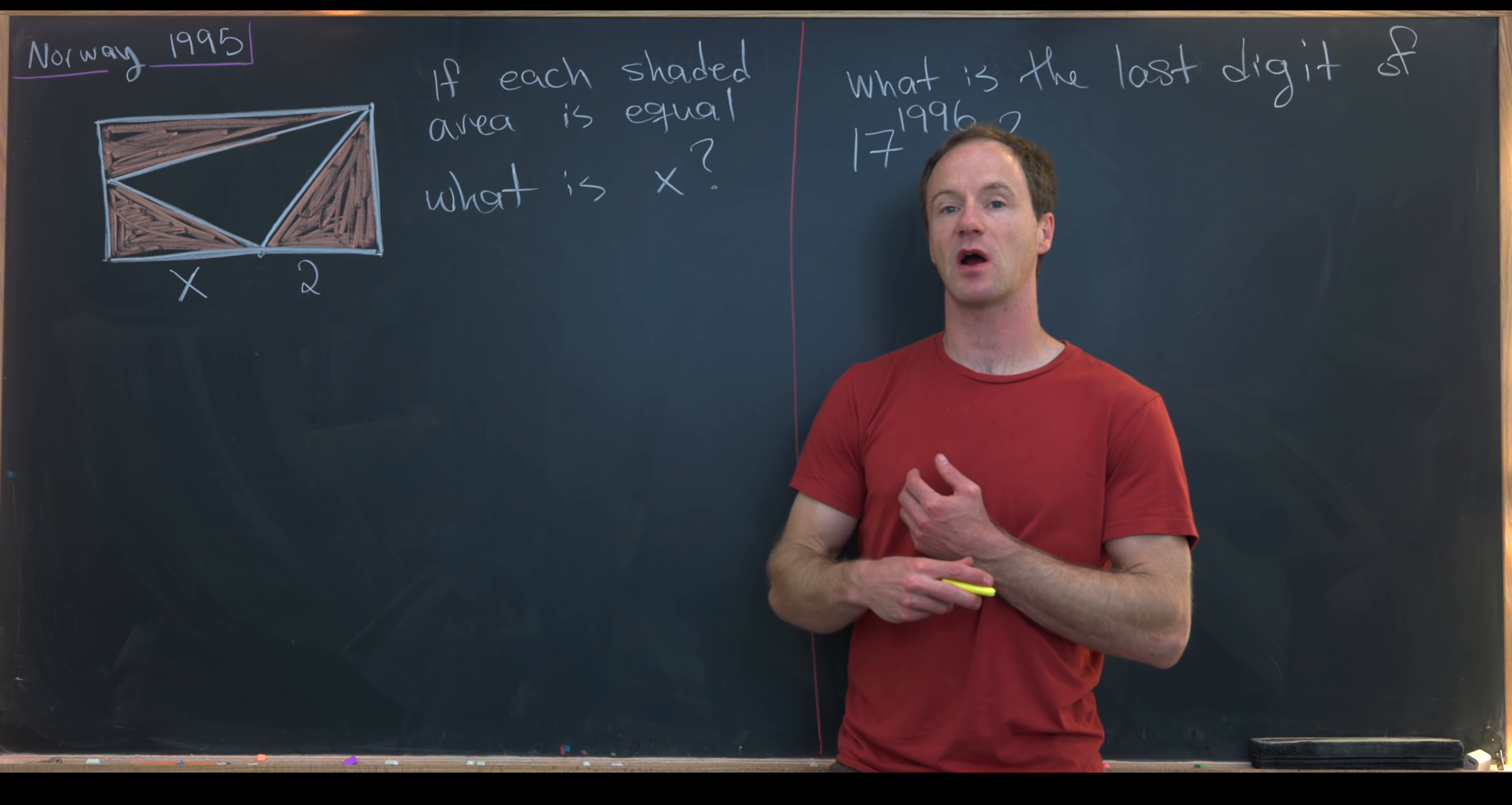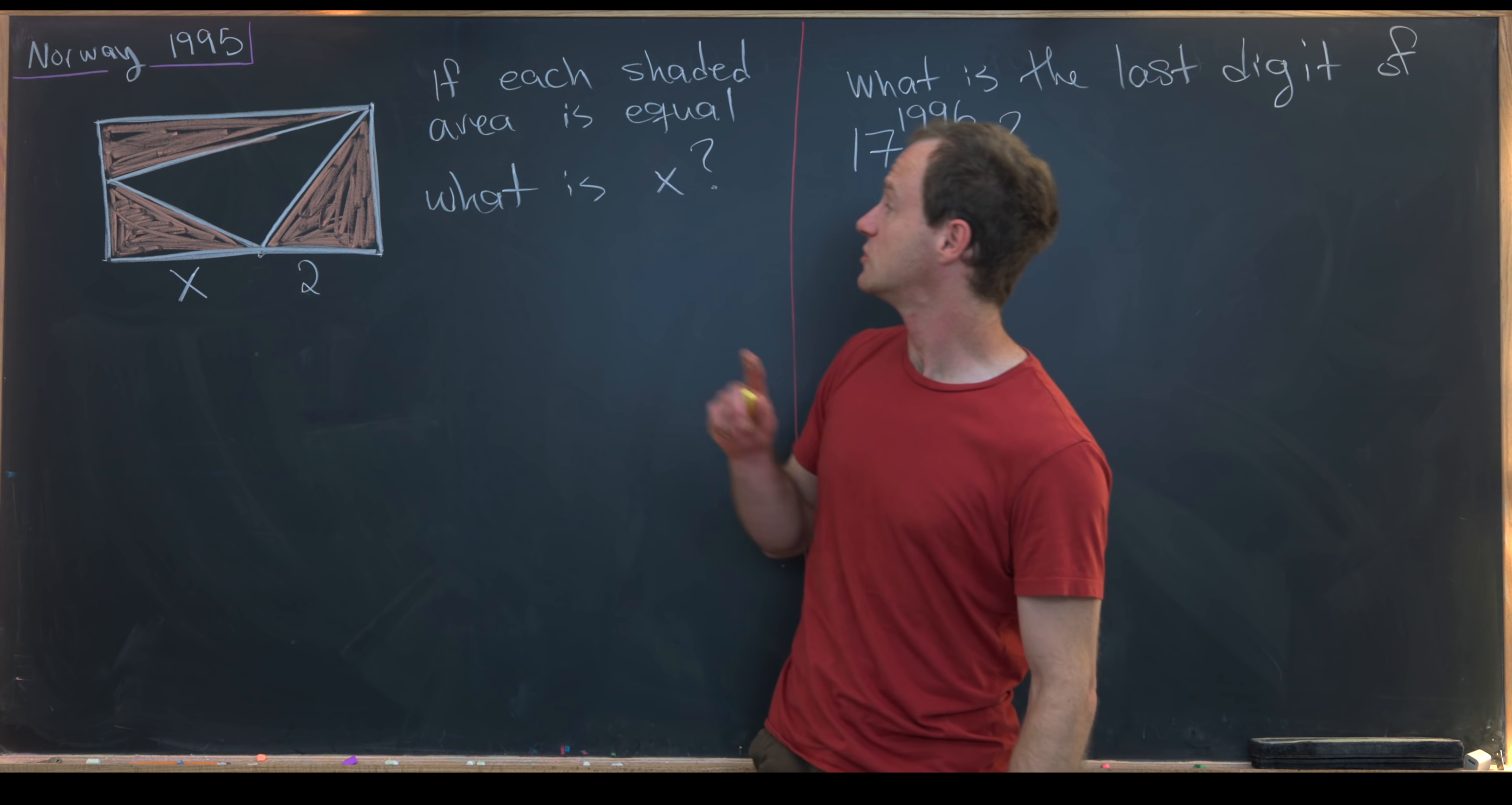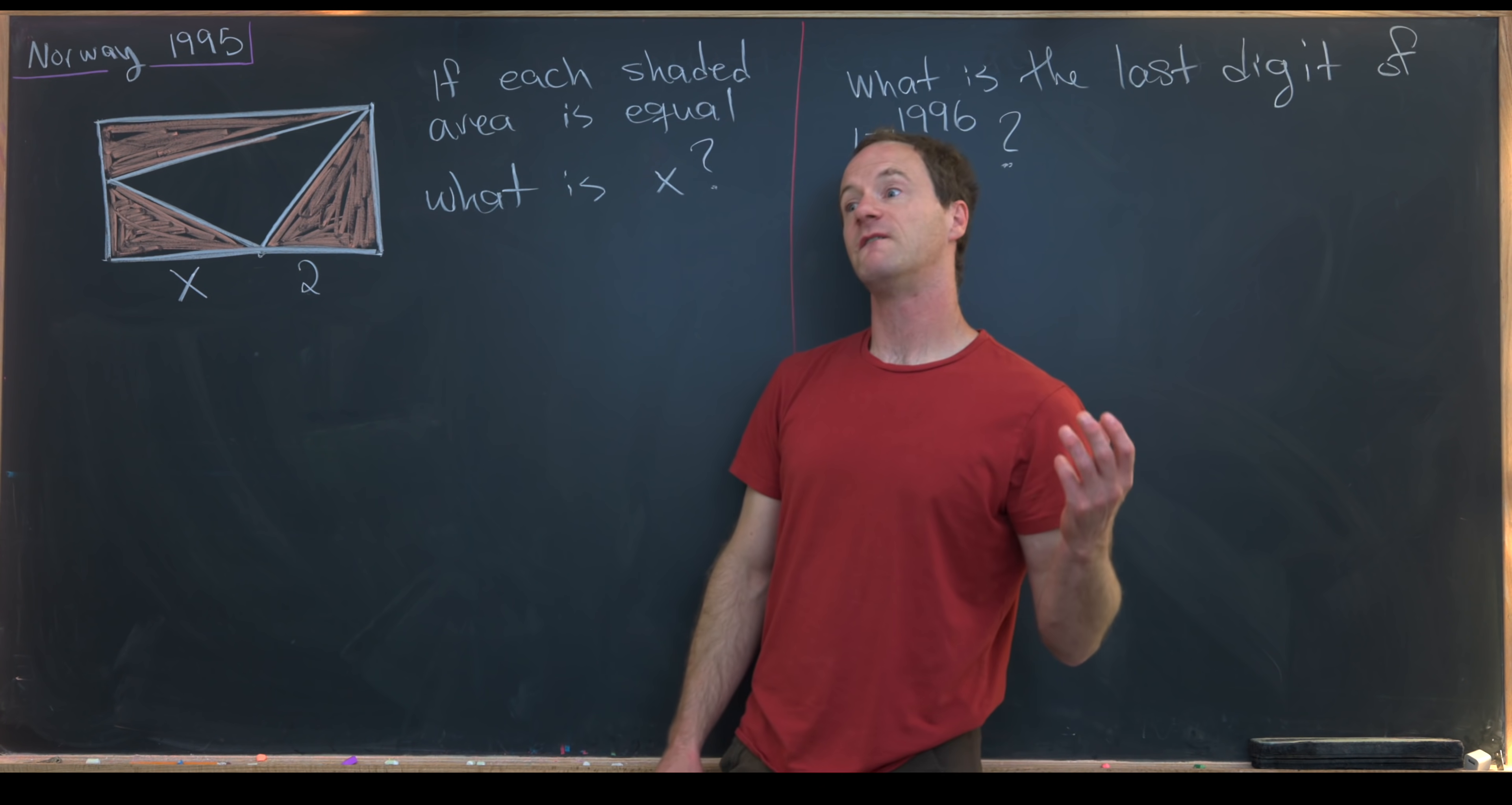So let's look at our first problem, which is a nice geometry problem. We've got a rectangle, and inside that rectangle, we have some line segments building these three right triangles. Next, we assume that the area of each of these right triangles is the same. So the area of this is equal to the area of this, which is equal to the area of this.